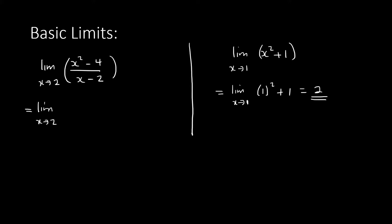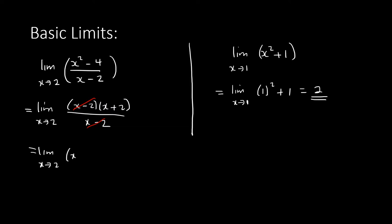Now with the first example, if you substitute 2 into the top you get 2² - 4 = 0, and at the bottom 2 - 2 = 0, giving zero over zero which is undefined. But x² - 4 is a difference of two squares, so we write it as (x - 2)(x + 2). The (x - 2) cancels and we're left with the limit as x approaches 2 of (x + 2), which gives 4.